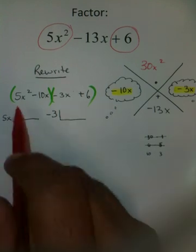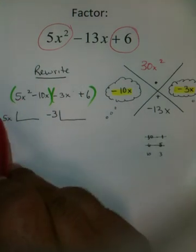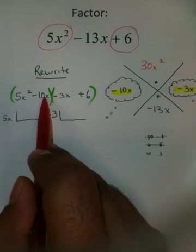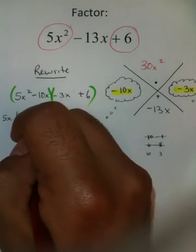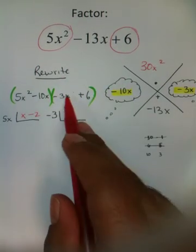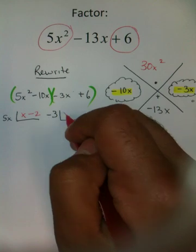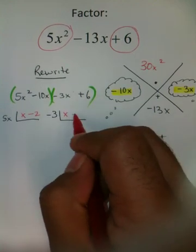So, regular factoring, division – dividing each term – you're going to get x minus 2. And after you divide this, you're also going to get a positive x and a negative 2.